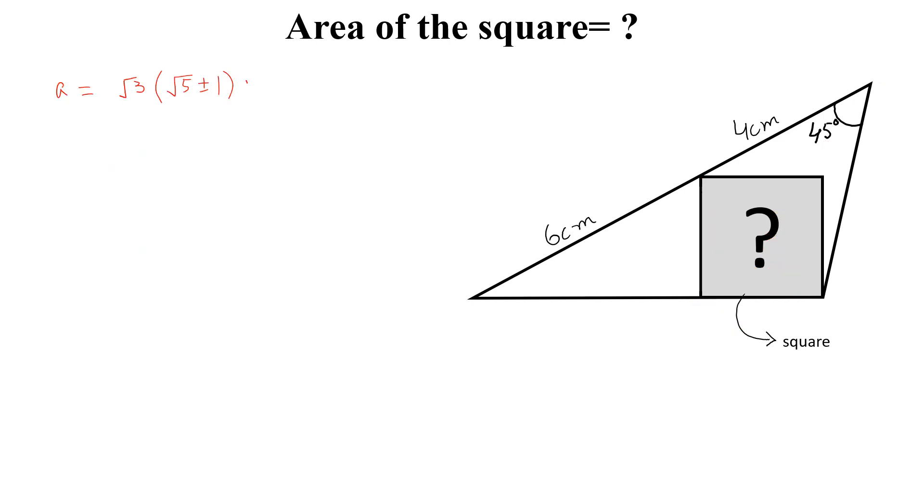So this is the side of the square. Now if we want to calculate the area of the square, that will be equal to A squared and A squared is 3 into 5 plus 1 plus minus 2 square root of 5. If we simplify this, so A squared equal to 6 into 3 plus minus 2 square root of 5. And this is the required shaded area.